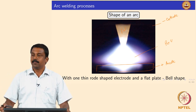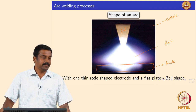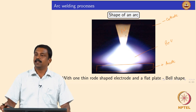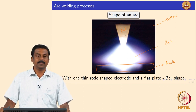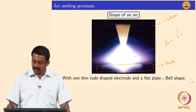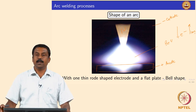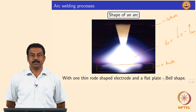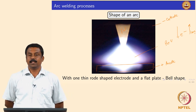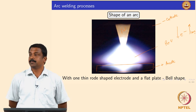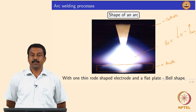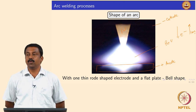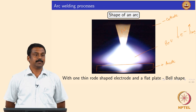Similarly, the ions which are generated because of the discharge would travel towards the electrode. So electrons travel from cathode to anode, and ions travel from anode to cathode. This is extremely important because energy generation and transfer is determined by the motion of the energy carriers. Because of its mass and density, electrons always carry more energy and more heat.